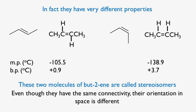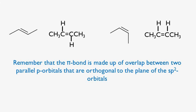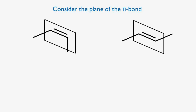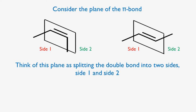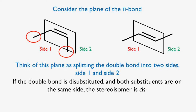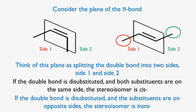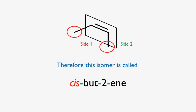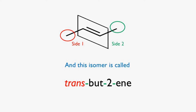Even though they have the same connectivity, their orientation in space is different. The pi bond is made up of overlap between two parallel p orbitals that are orthogonal to the plane of the sp2 orbitals. Think of the plane of the pi bond as splitting the double bond into two sides — side 1 and side 2. If the double bond is disubstituted and both substituents are on the same side, the stereoisomer is cis. If the substituents are on opposite sides, the stereoisomer is trans. Therefore, one isomer of butene is called cis-butene and the other is called trans-butene.